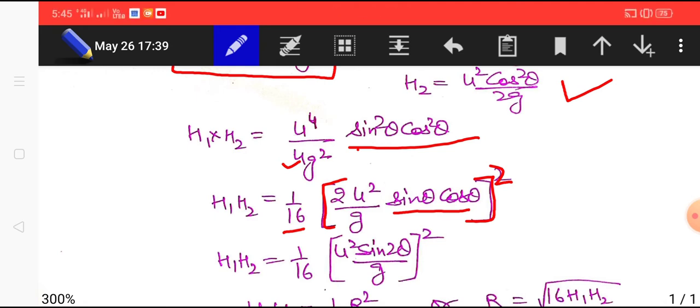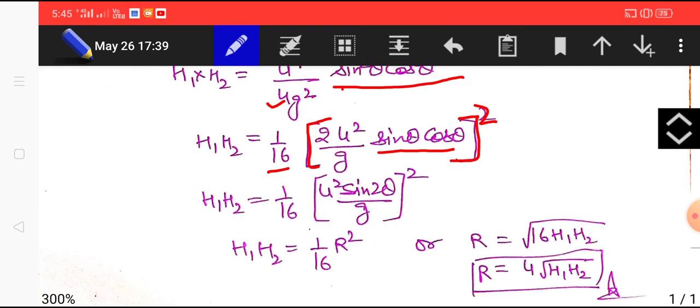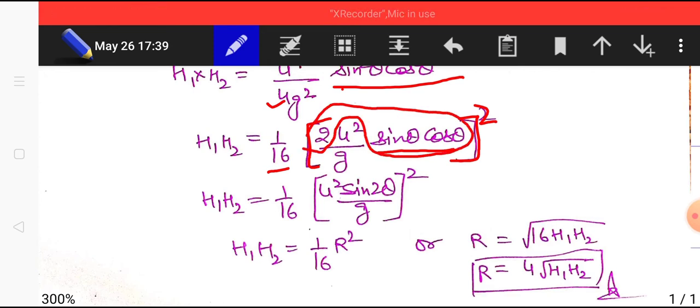u4 will become u squared and 4 by which I multiplied becomes 2 and g squared will become g. Why I am doing so? Because I know that 2 sine theta cos theta is sine 2 theta and u squared sine 2 theta by g is the formula of range.